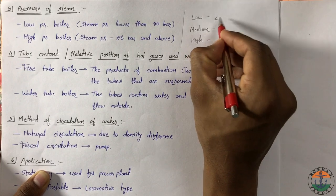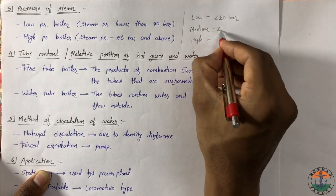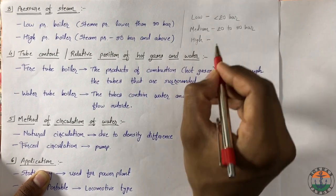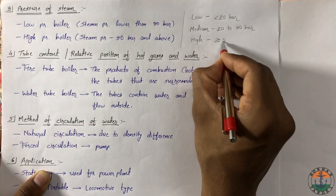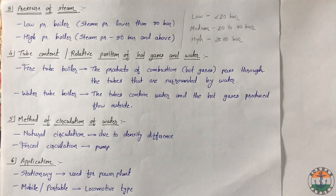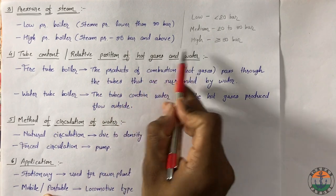Pressure limits are less than 20 bar. For medium pressure boiler, 20 to 80 bar.